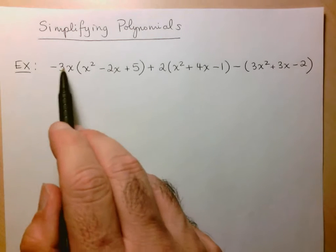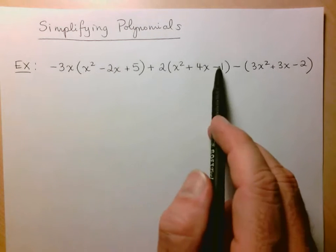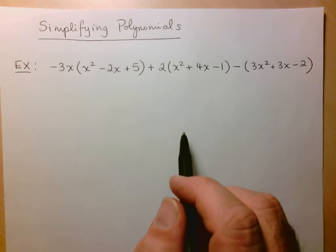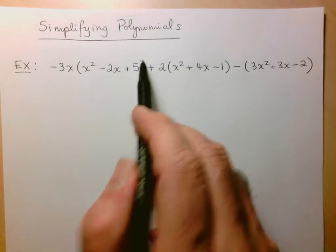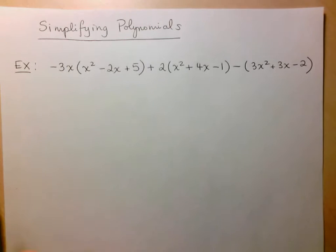None of these monomials or polynomials have exponents on them. So there's no squared or cubed here or any squared or cubed around the minus 3x. So there's no exponents we have to take care of. So now we're left with multiplications and additions and subtractions.